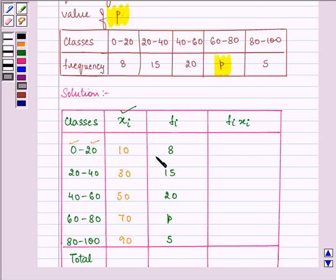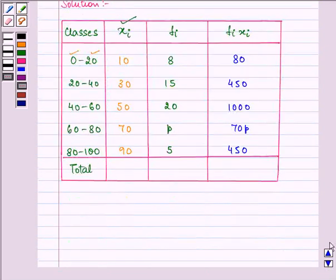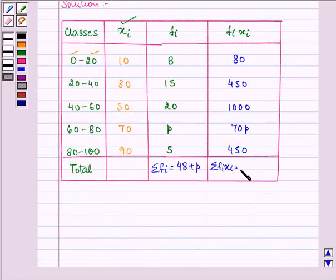Now we will multiply Xi with Fi to get 80, 450, 1000, 70P and 450. Now we will find out the sum of Fi and the sum of Fi Xi, which is coming out to be 1980 plus 70P.